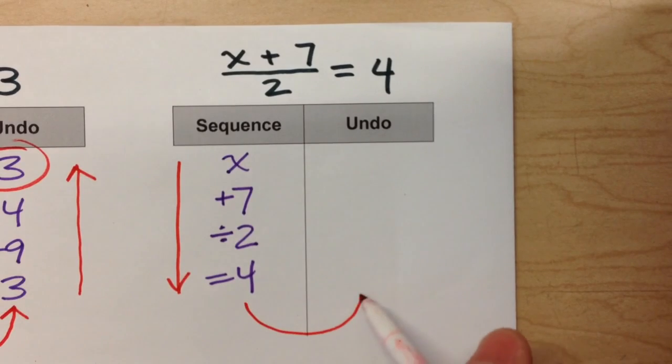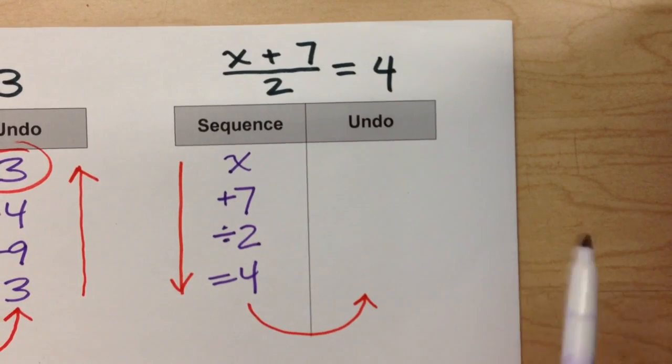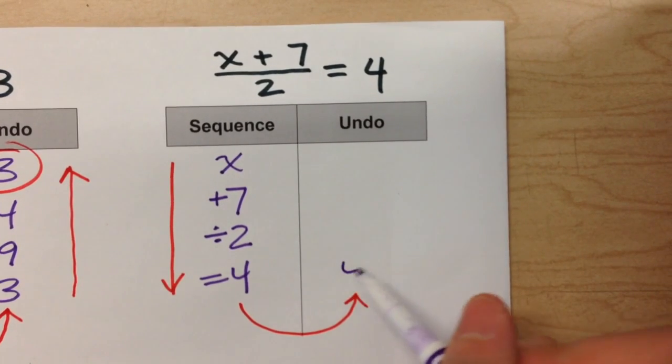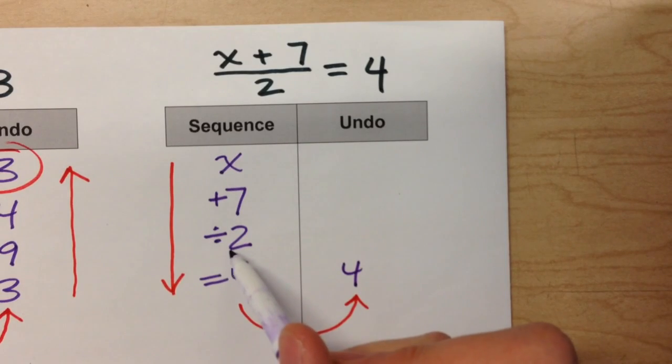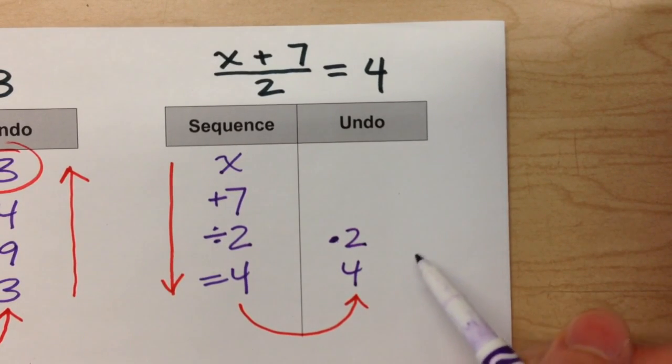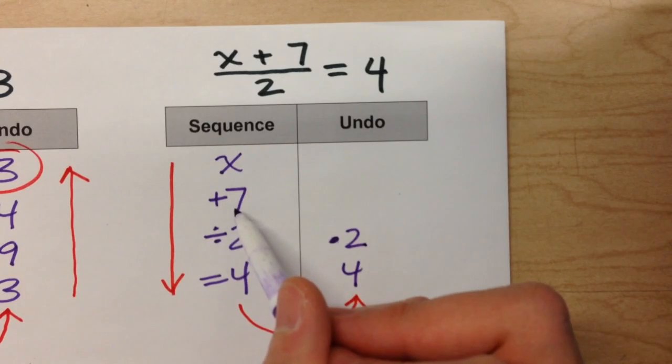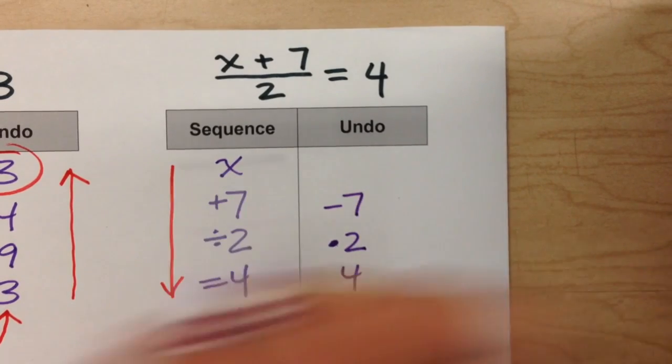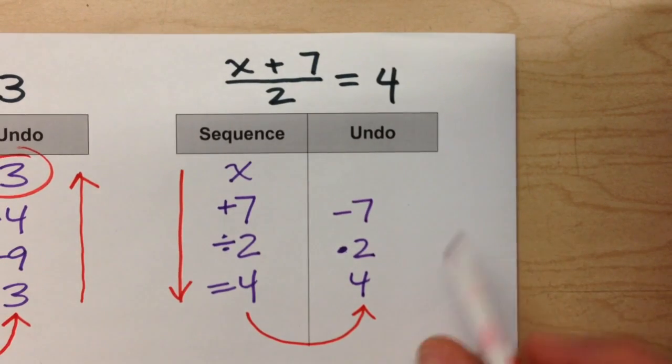Now to undo it, we're going to put it into the undo column. Starting with 4, to undo dividing by 2, we're going to multiply it by 2. To undo adding 7, we're going to subtract 7. And that should get us our answer.